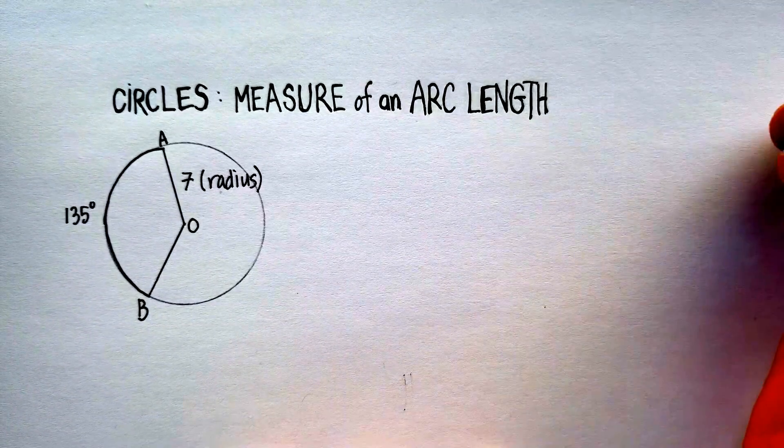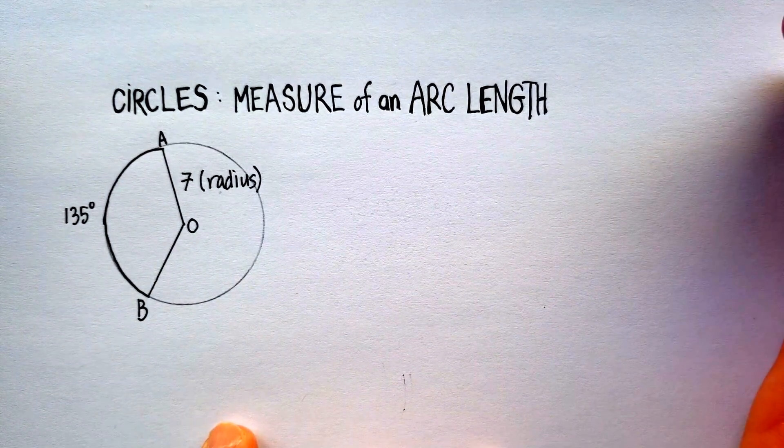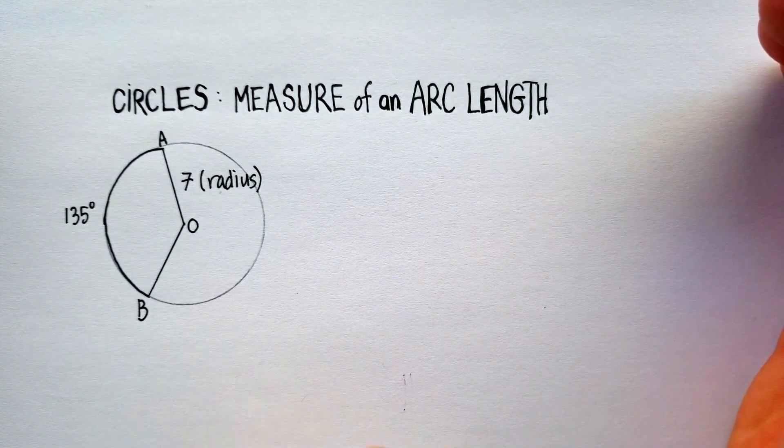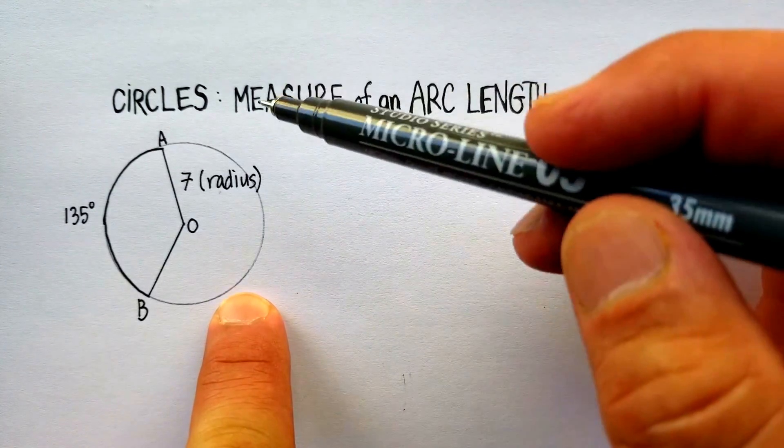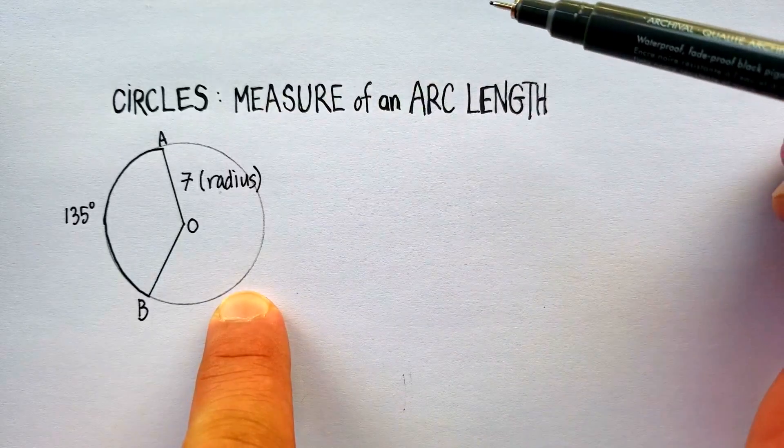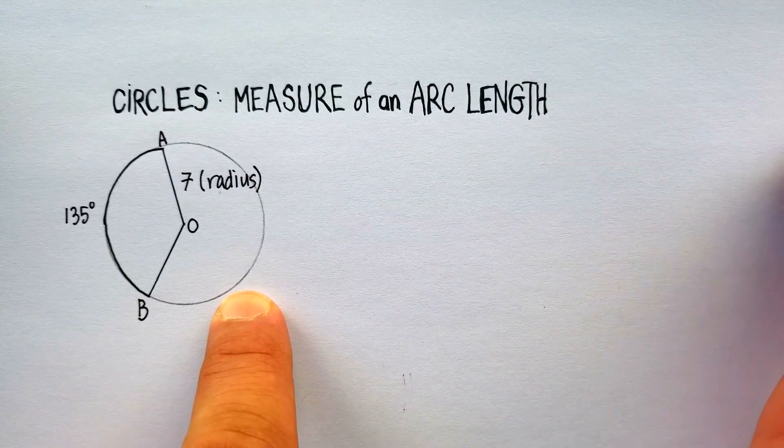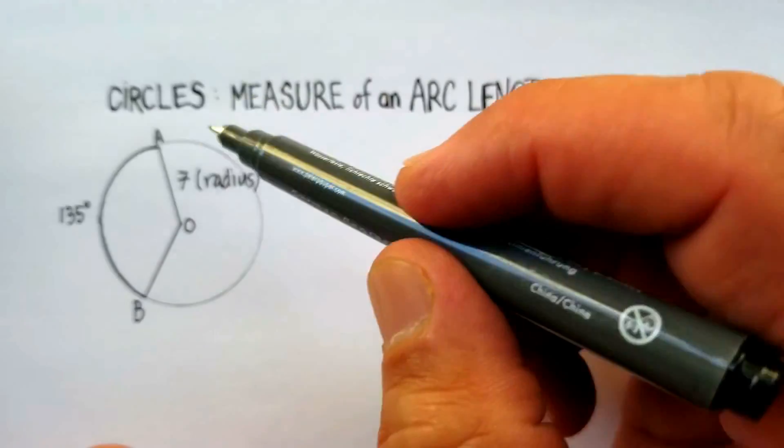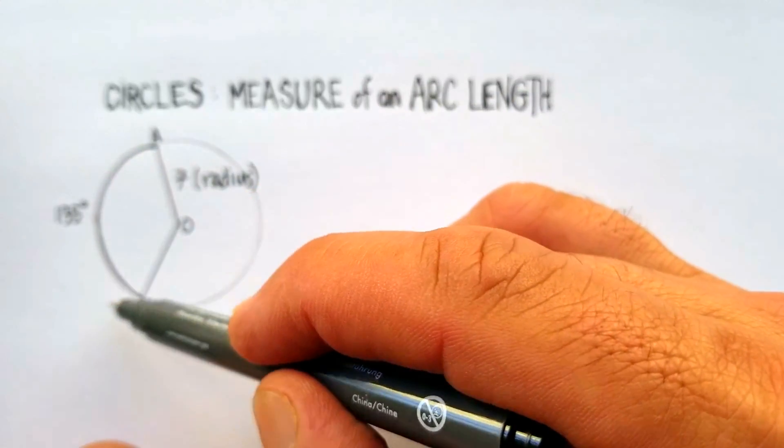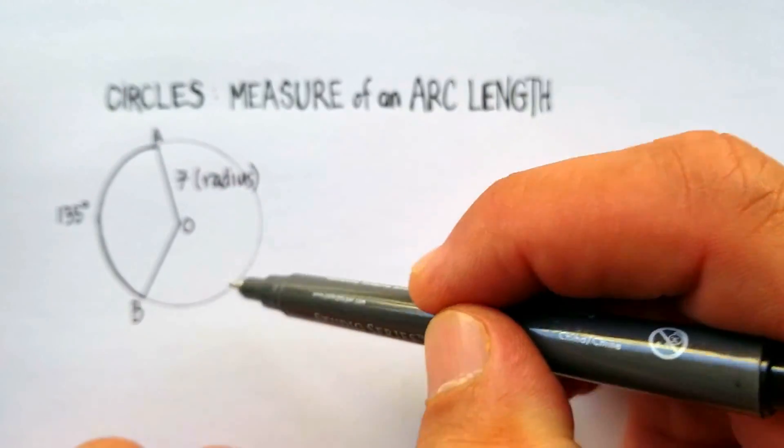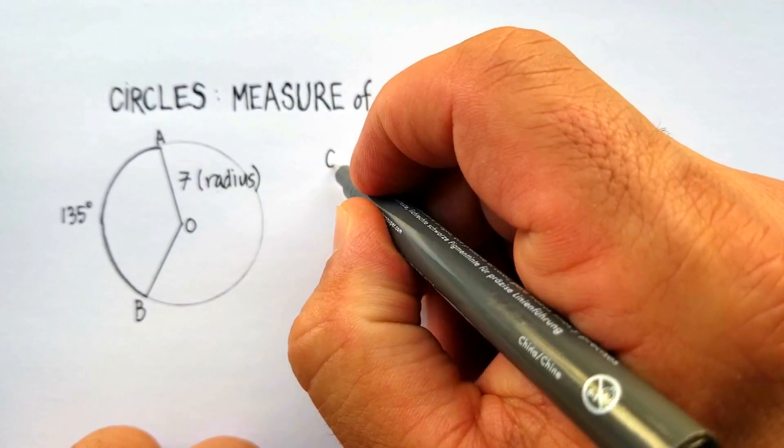So let's get started. What do we need to know about the relationship between arc lengths and circumference and radius? Well, we know that the length around a circle, the circumference of a circle, is equal to 2 times pi times r.